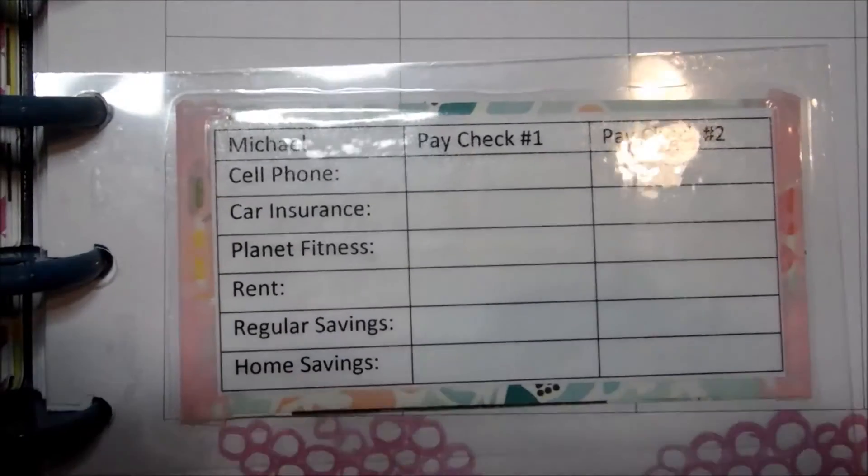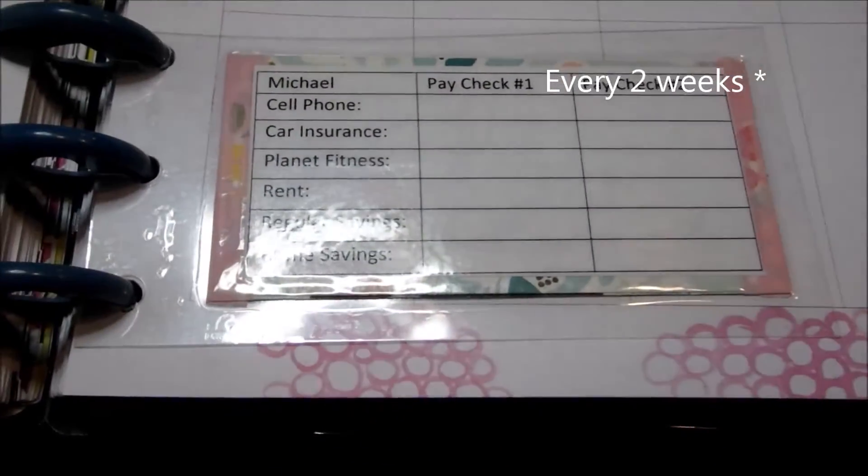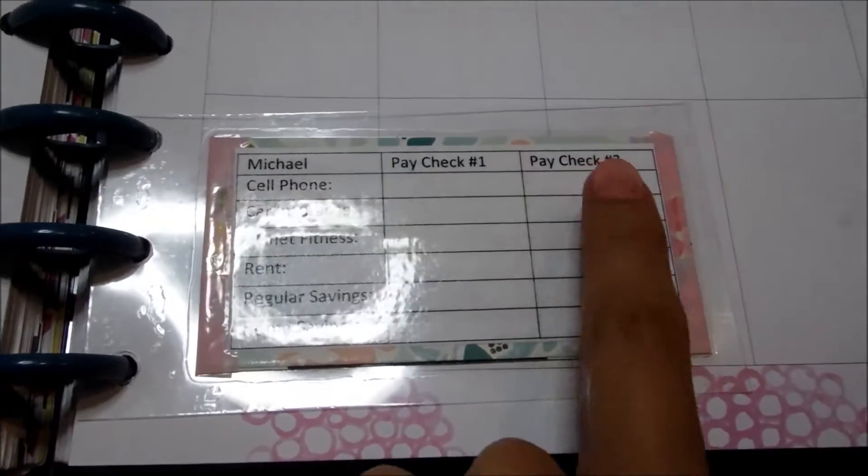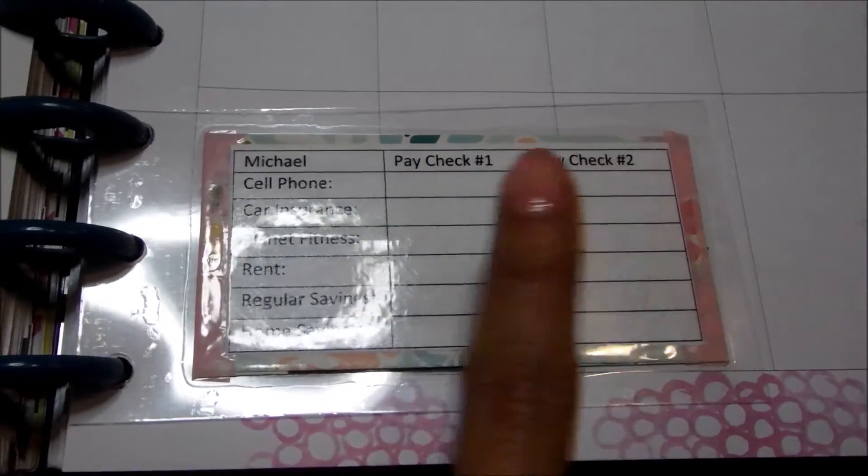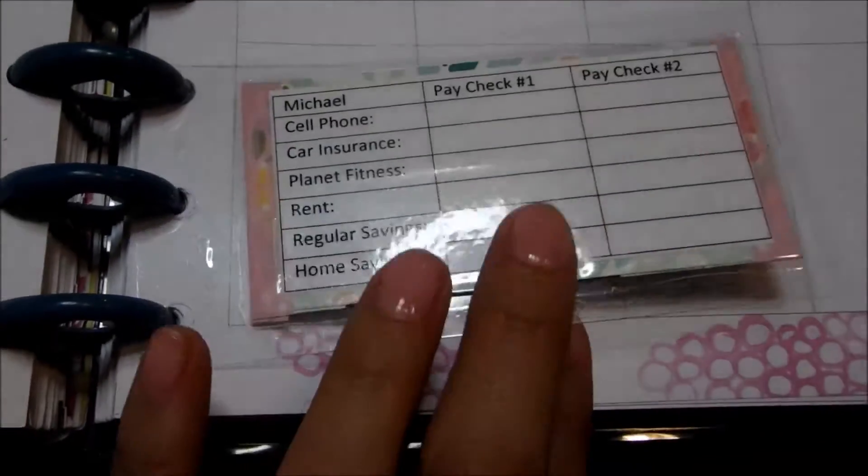So this is what I do to calculate our bills every two months. It's just pretty basic. It's our basic bills, nothing too crazy. We have paycheck number one, paycheck number two, and this is Michael's paychecks. The bills that we have to pay with those checks.